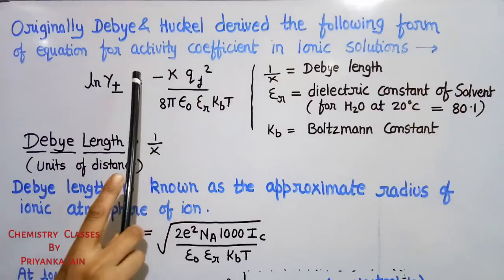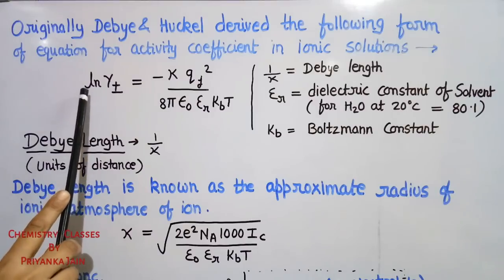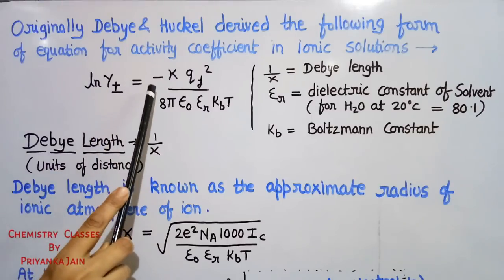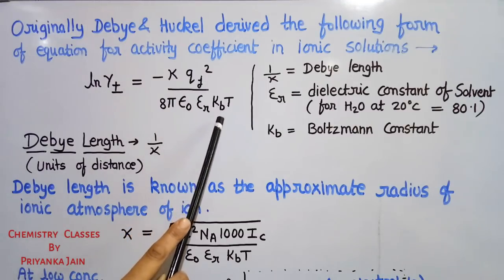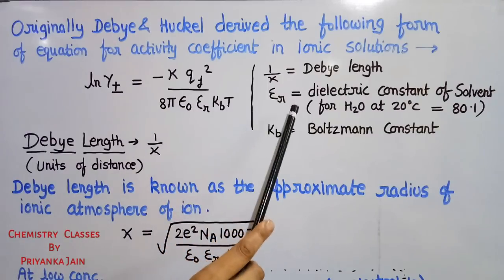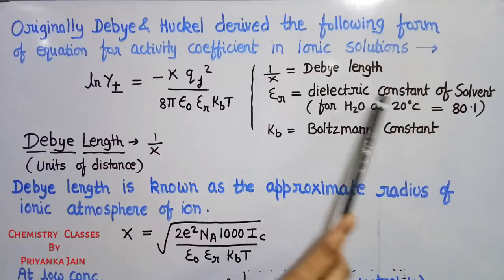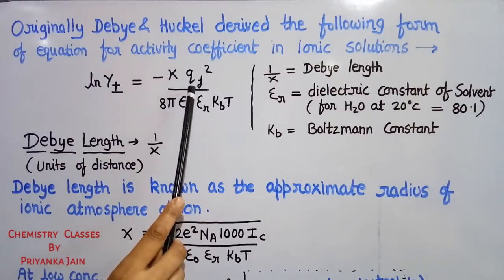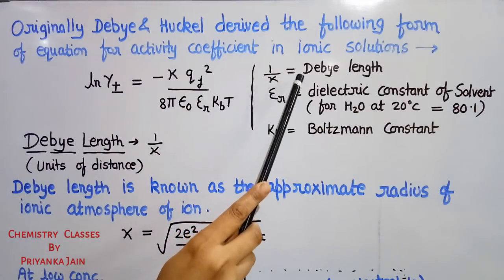Originally, Debye and Hückel derived the following form of equation for the activity coefficient in ionic solutions: ln γ± equals minus k times qⱼ² divided by 8π ε₀ εᵣ k_B T. Here εᵣ is the dielectric constant of the solvent — for aqueous solution at 20°C its value is 80.1. k_B is the Boltzmann constant, T is the temperature, q is the charge, and the reciprocal of kappa is known as the Debye length.